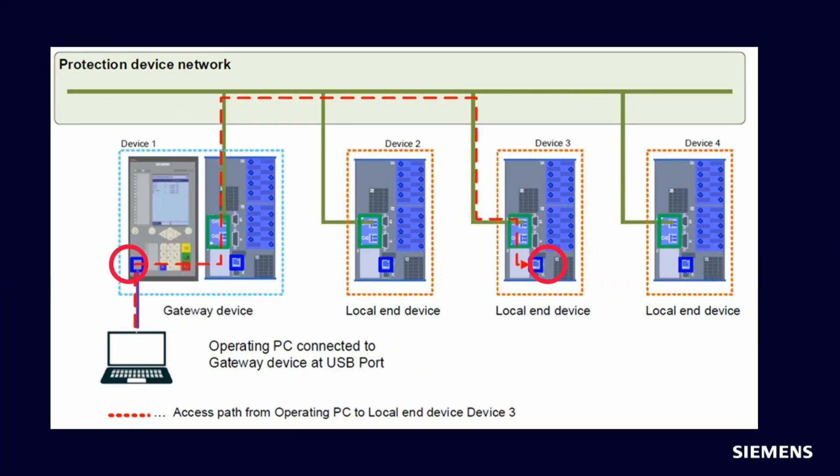And here, the access path from the operating PC via the USB port of the gateway device to a local end device can be seen.